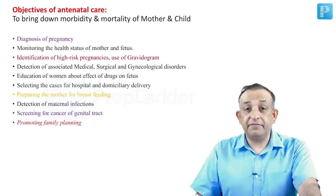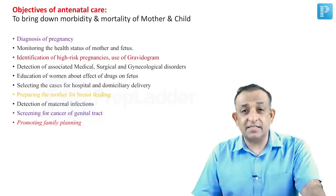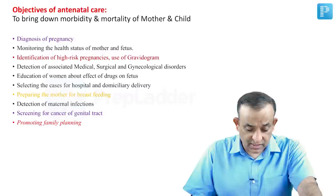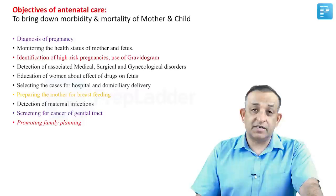Other objectives include identification of high-risk pregnancies — such as twins and short-statured pregnancies — detection of associated medical, surgical, and gynaecological disorders, education of women regarding the effects of drugs on the fetus, selecting cases for hospital versus domiciliary deliveries, and preparing the mother for breastfeeding.